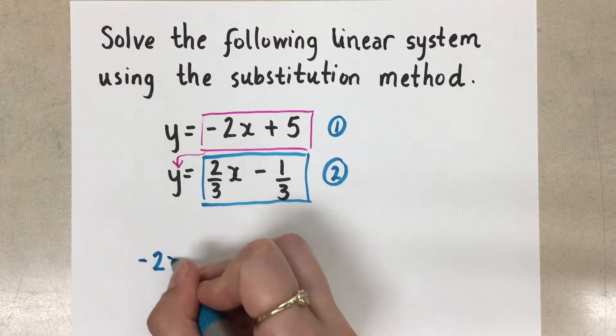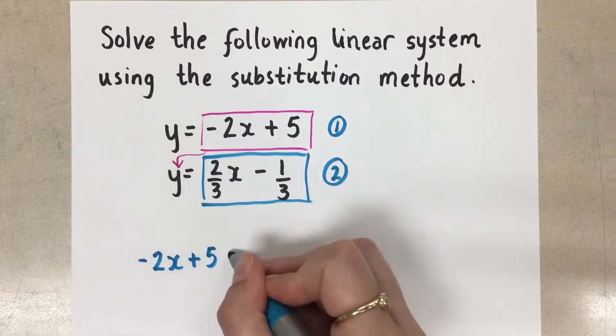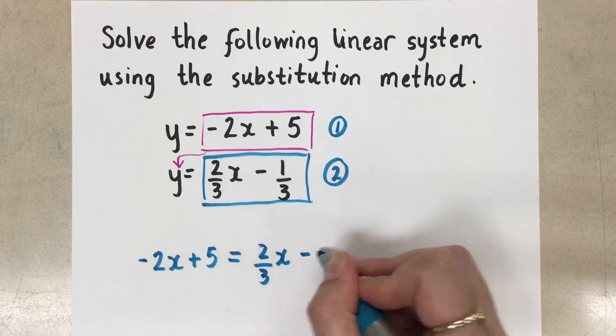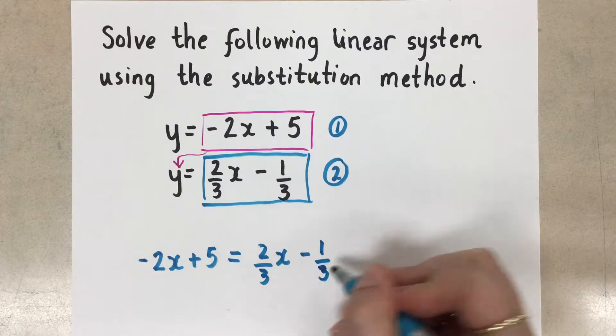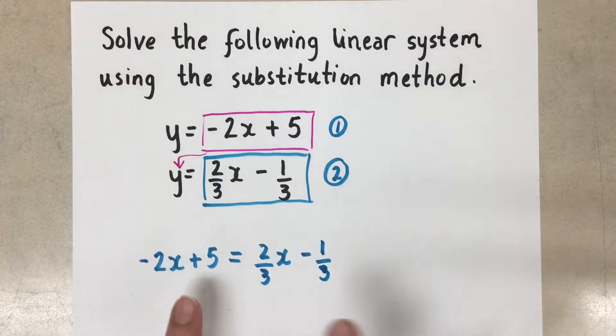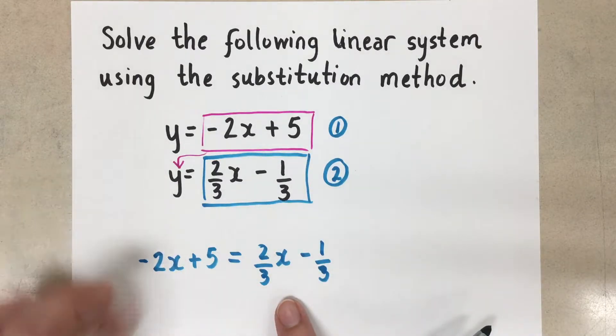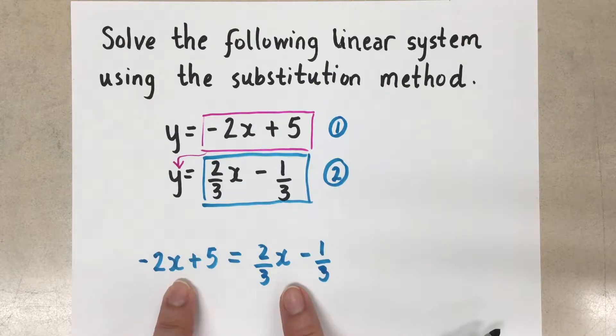Negative 2x plus 5 equals 2 over 3x minus 1 over 3. And so now they're equal to each other. And what we've accomplished by subbing them into each other is we've gotten rid of the y variables, and we only have x variables here now.